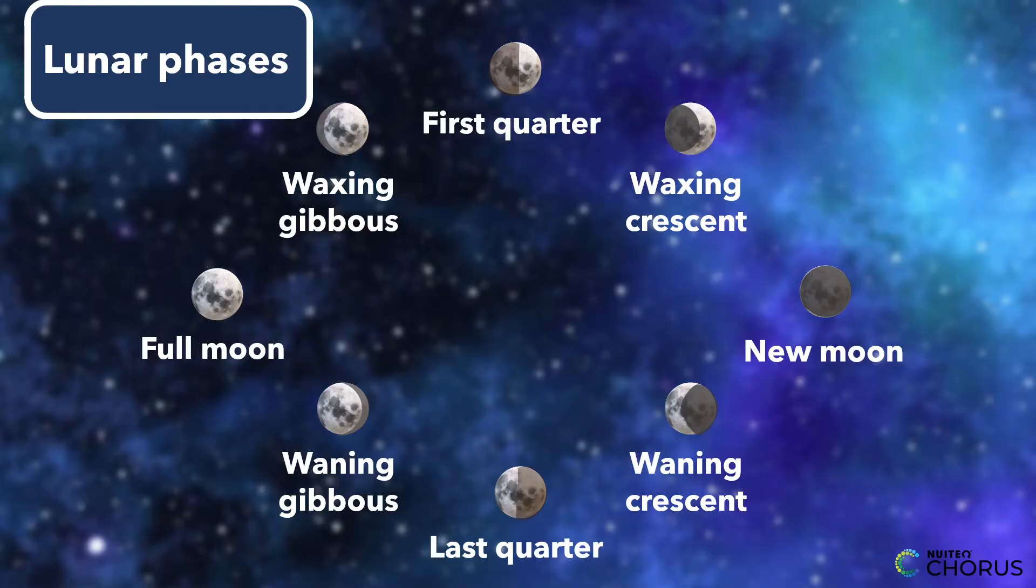This happens because of the way the sunlight is hitting the Moon. As it goes around the Earth, different parts of the Moon are getting more or less sunlight, so we see different shapes in the sky.